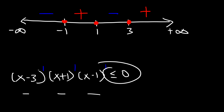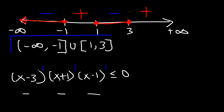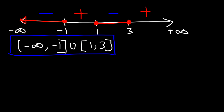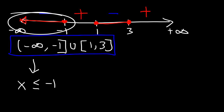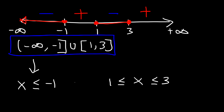We want the part that's negative, so we want the leftmost region and the region between 1 and 3. In interval notation the answer is negative infinity to negative 1, including negative 1, using brackets, union 1 to 3 with brackets. As an inequality: x is less than or equal to negative 1, or 1 is less than or equal to x is less than or equal to 3.